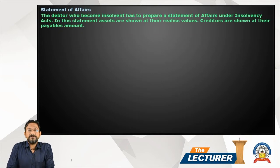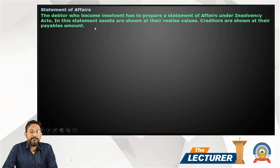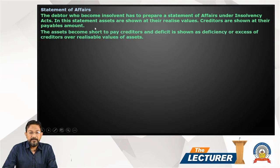Statement of Affairs: The debtor who becomes insolvent has to prepare a statement of affairs under the insolvency act. In this statement, assets are shown at their realizable value and creditors are shown at their payable amount. The assets may fall short to pay creditors, and the deficit is shown as the deficiency, or excess of creditors over the realizable value of assets.